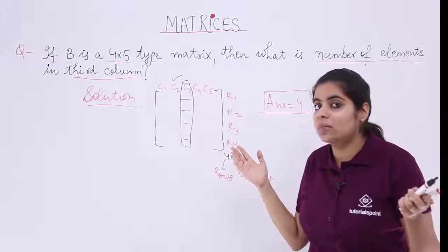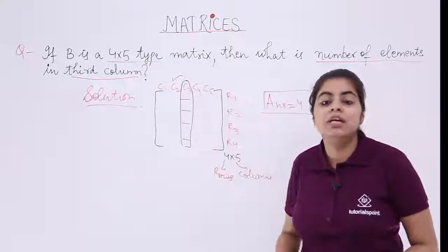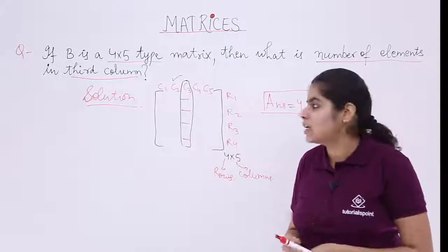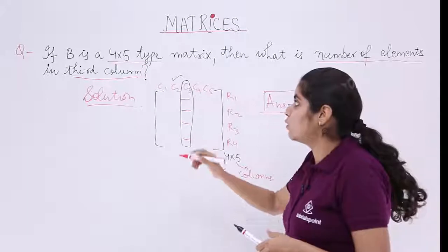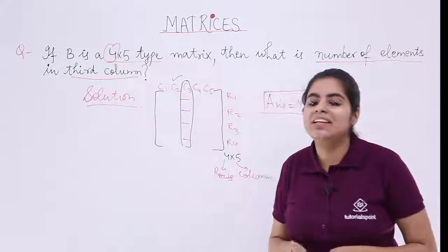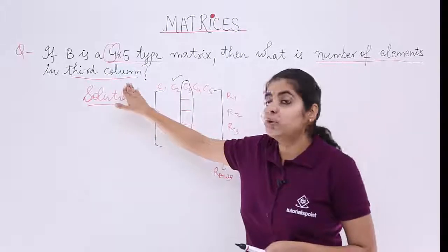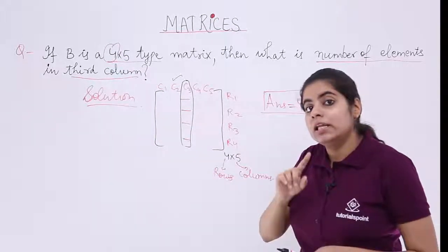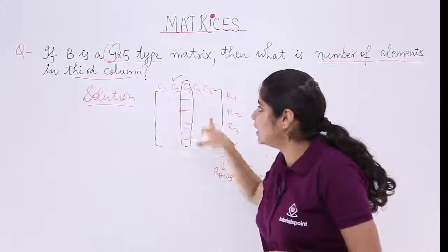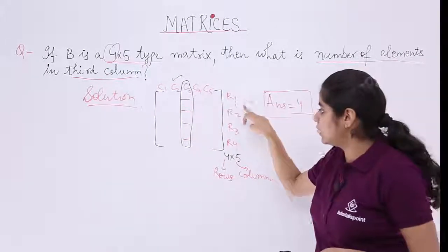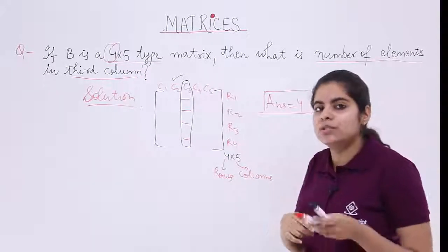So any column the examiner asks me either column 1, 2, 3, 4 or 5. The number of elements does not change. It is 4 only and what was 4? In the order the number of rows were 4. So whenever something about the column is asked, the answer would be the number of rows. That means here it is 4 rows. You see here 4 rows. Hence the answer is 4. But if the question is different.